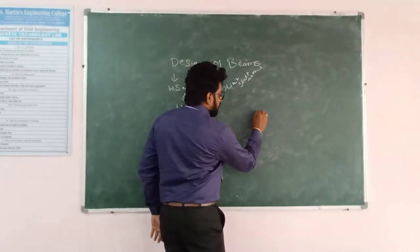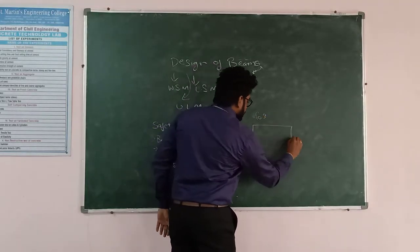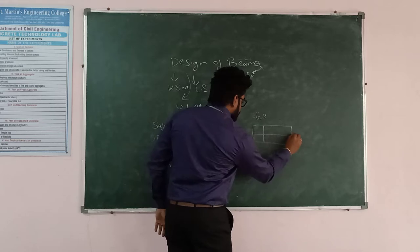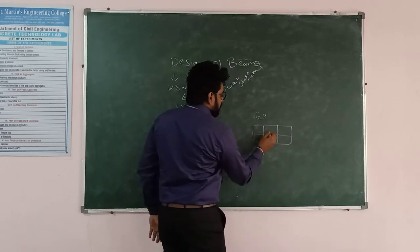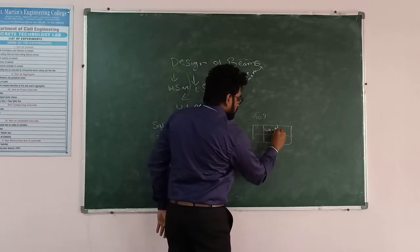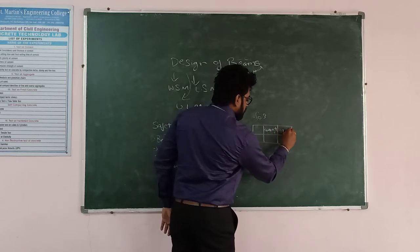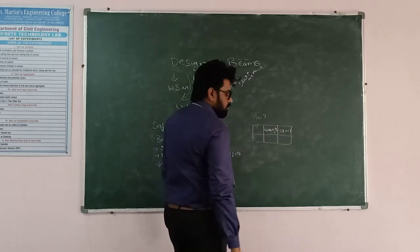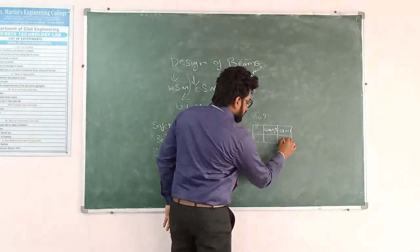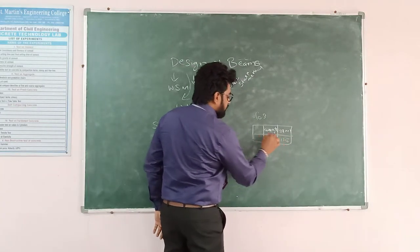For safety, we use a Factor of Safety. There are two components: Concrete and Steel. For steel, the factor of safety is 1.15, and for concrete it is 1.5, for the Limit State Method.